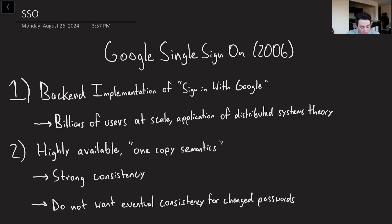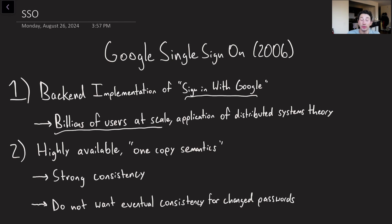Today we're going to be talking about Google SSO from 2006. This is a workflow we've probably all used plenty of times — whenever an application uses your Google account as a third-party sign-in to allow you to sign in with Google. Even as far back as 2006, this was already pretty popular with billions of users at scale. The reason we're covering it is that it's one of the first papers about how to actually implement strong consistency, or single copy semantics, in practice at such a large scale.